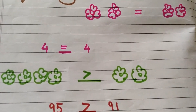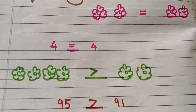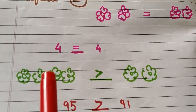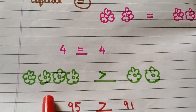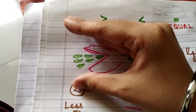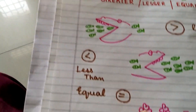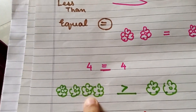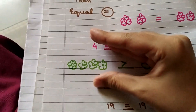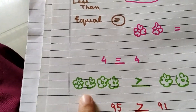As you all know children, in the number line which number comes first? Two comes first and after two comes four. So four is a bigger number, and the crocodile's mouth is open on the side which is having more number of fishes. So over here, as the number of flowers are more on this side, the crocodile's mouth will be open on the side where there is more number of flowers.